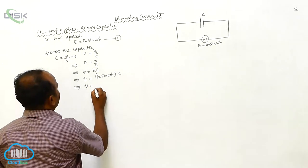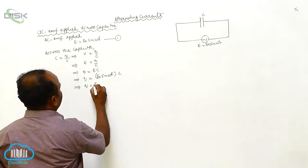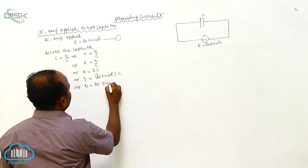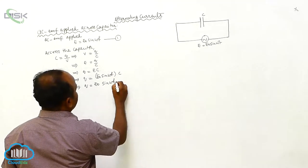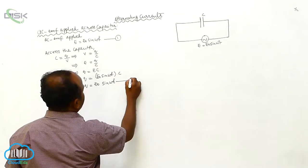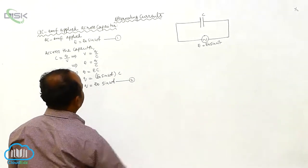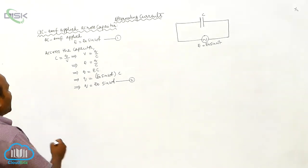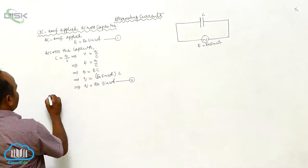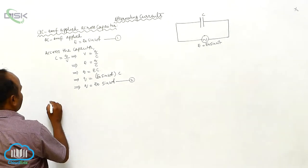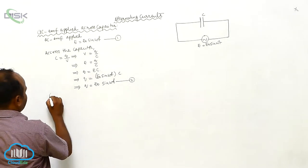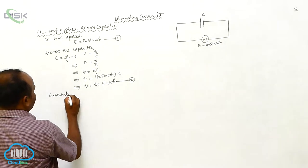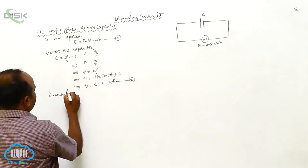The EMF may be written as E = E₀ sin(ωt). This is called the second equation. Now, from the current definition, i is equals to dq/dt.